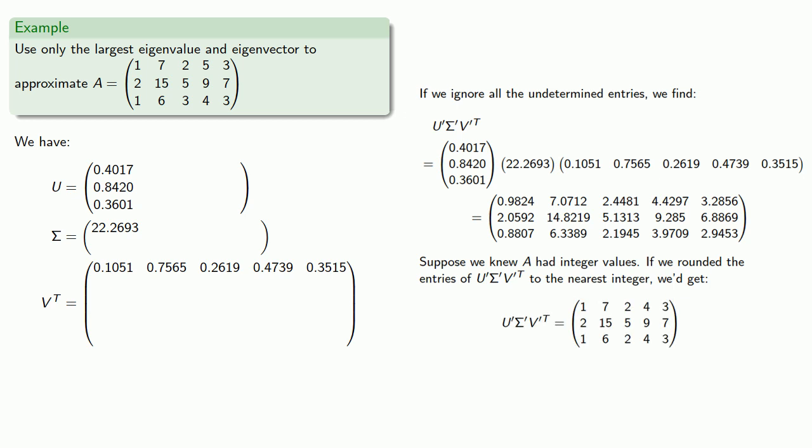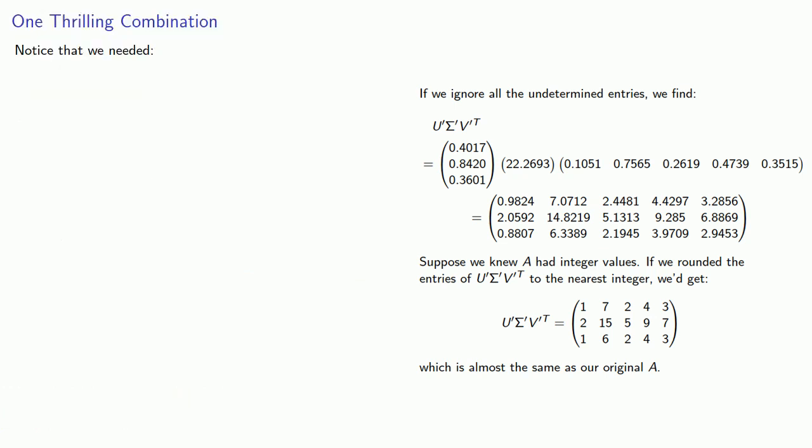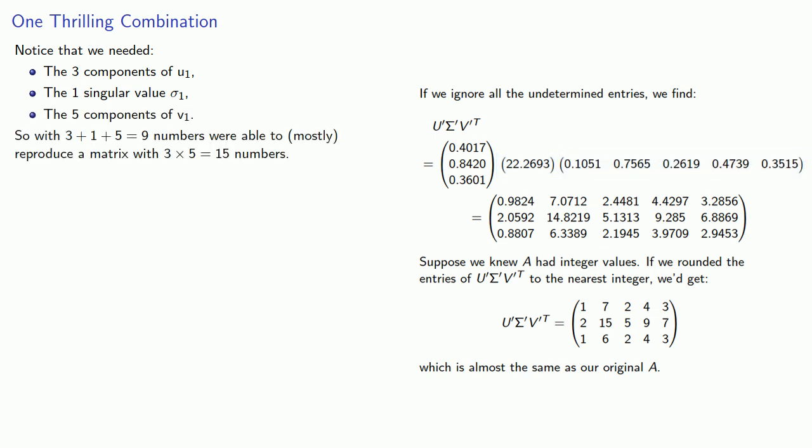And the thing to notice here is this is almost the same as our original matrix A. And this is a truly amazing result because notice that we needed the three components of our first vector, the one singular value σ_1, and the five components of V_1.